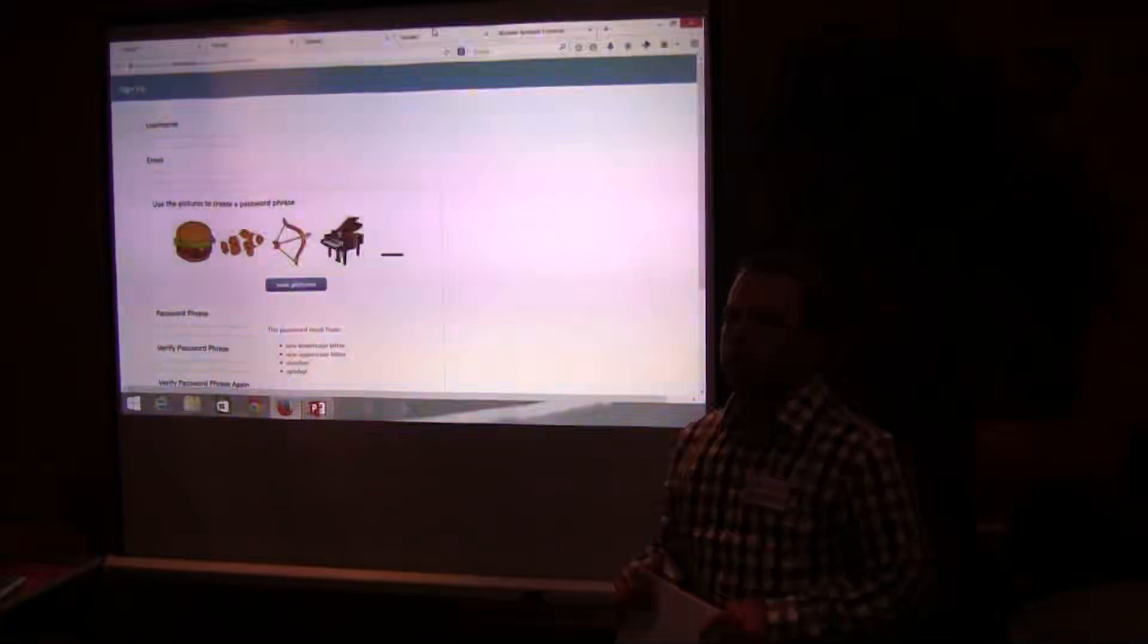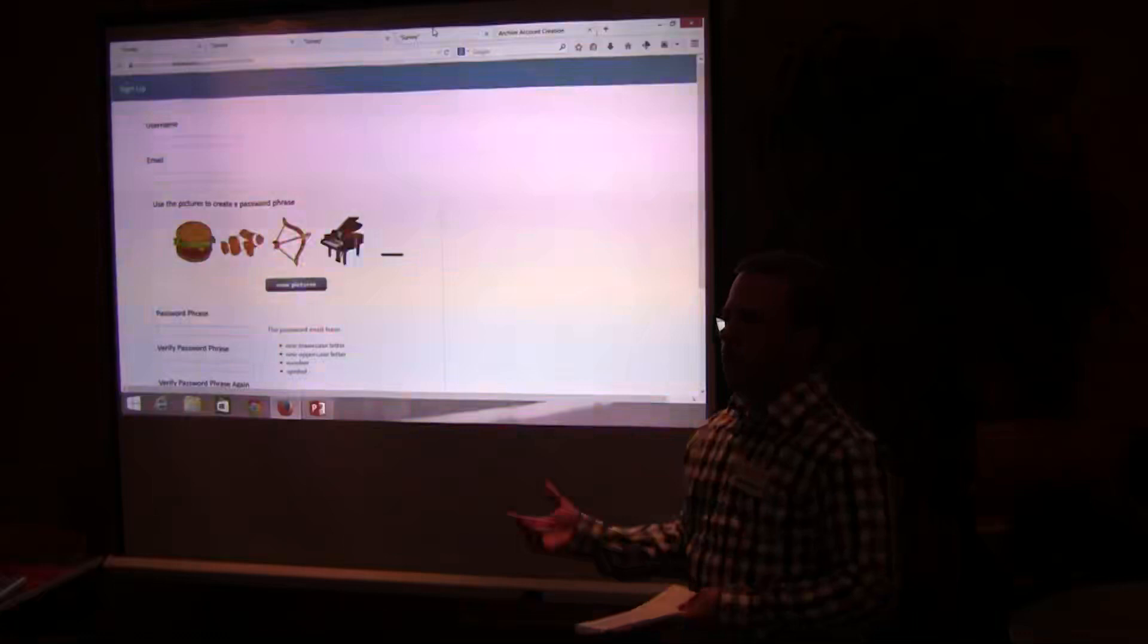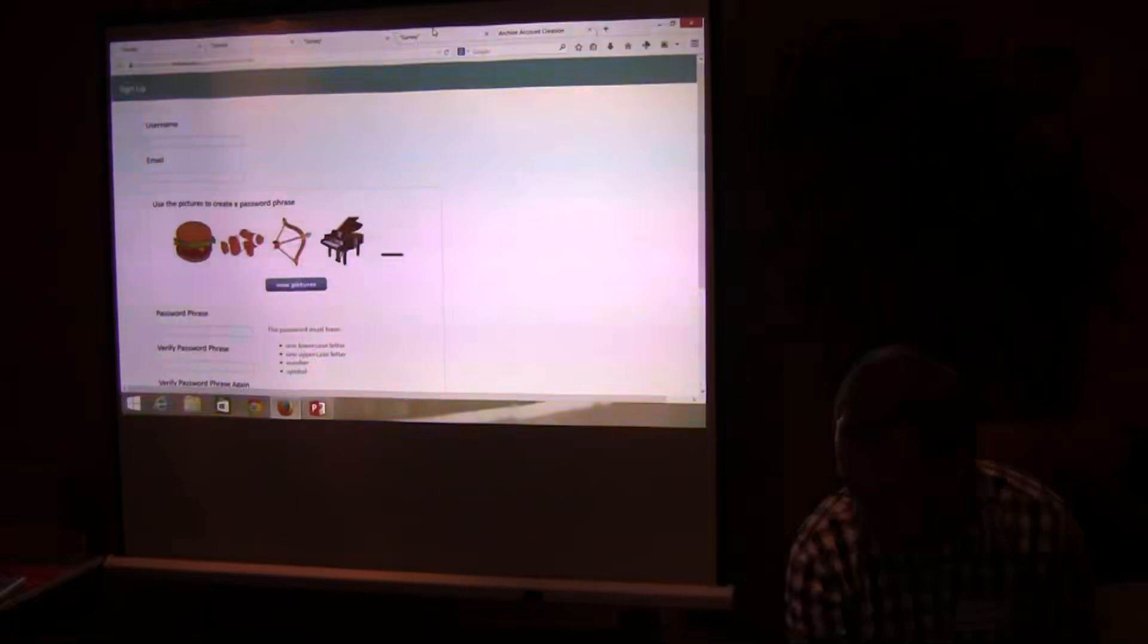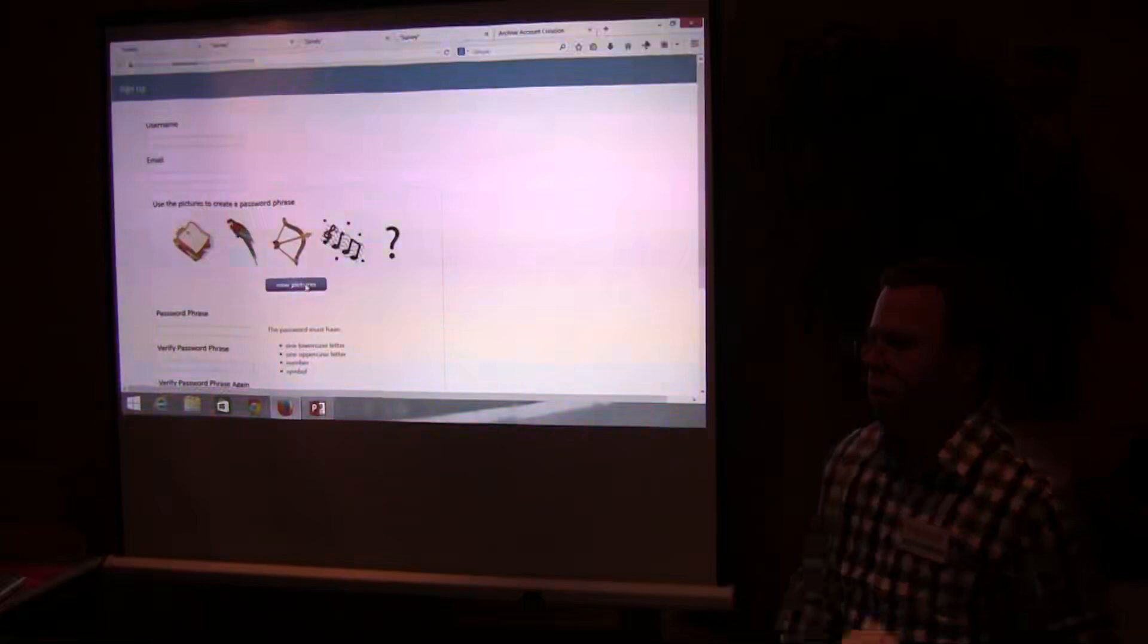And here is where we started doing it a little bit differently. This is the photo group where we actually showed them four different images, and it gives them a random symbol that is supposed to be used in the password that they create. And if they don't like the different images, they can just click the new pictures and it'll select a new set and a different symbol for them to use.